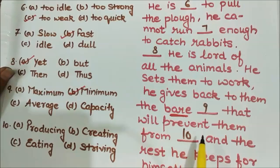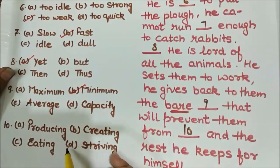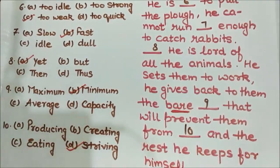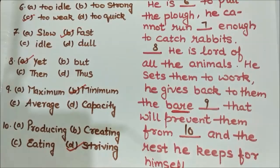The tenth blank: 'will prevent them from ___.' The options are producing, creating, eating, and starving. 'Starving' means dying of hunger. The amount of food a human gives to animals is just enough for their survival — the minimum amount that will prevent them from starving, from dying of hunger. And the rest he keeps for himself.